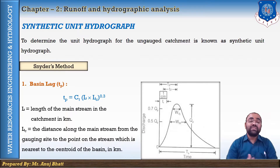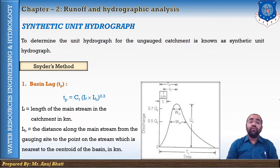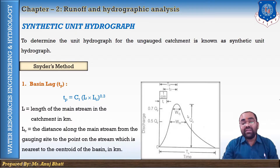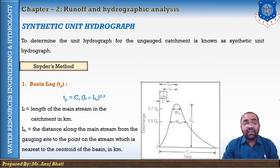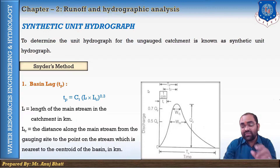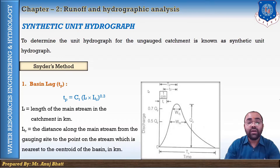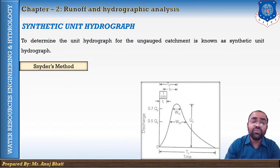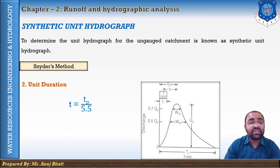Basin lag is the time interval from the midpoint of the unit rainfall axis to the peak of the unit hydrograph. As shown in this figure, the middle value of the unit rainfall box to the peak discharge value gives the basin lag. The next characteristic is unit duration, where t equals tp divided by 5.5.